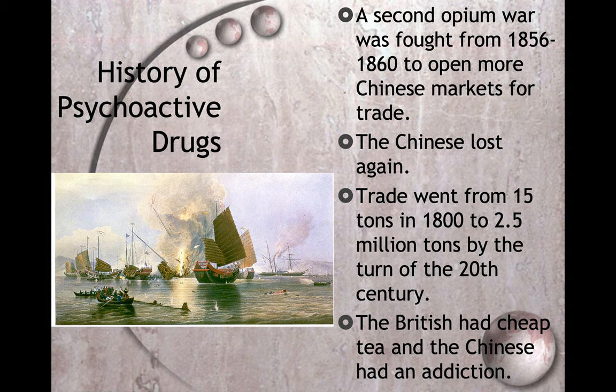A second opium war was fought from 1856 to 1860 to open more Chinese markets for the trade. The Chinese lost again. Trade went from 15 tons in 1800 to 2.5 million tons by the turn of the 20th century. The British had cheap tea and the Chinese had an addiction. Opium wasn't being grown in China — it was being grown in India by the British. A lot of the wealthy and even royal families of England were essentially opium dealers, forcing the Chinese to open more and more ports.